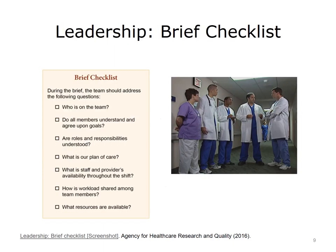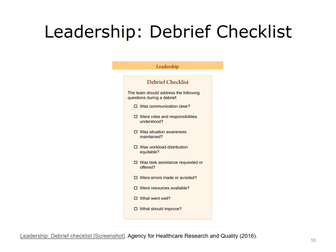Here is an example of a checklist from the TeamSTEPPS site. It includes asking: Who is on the team? Do all members understand and agree upon goals? Are roles and responsibilities understood? What is our plan of care? Staff and provider availability throughout the shift, workload among team members, and availability of resources. The debriefing checklist questions include: Communication clear? Roles and responsibilities understood? Situation awareness maintained? Workload distribution equitable? Task assistance requested or offered? Were errors made or avoided? Availability of resources? What went well? What should change? What should improve?